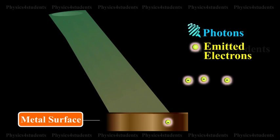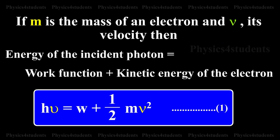The remaining energy of the photon is used to impart kinetic energy to the liberated electron. If M is the mass of an electron and V its velocity,